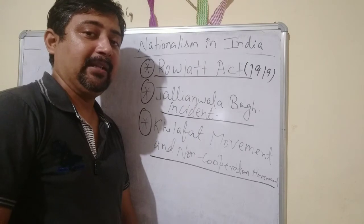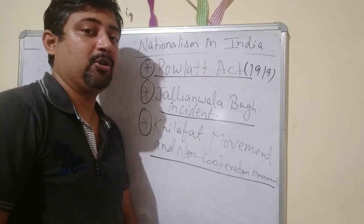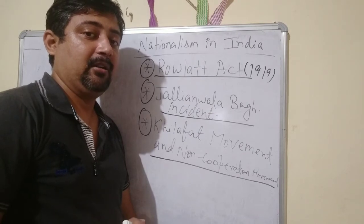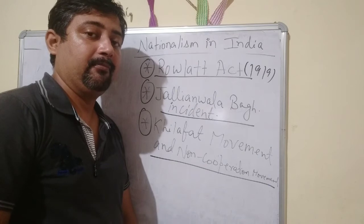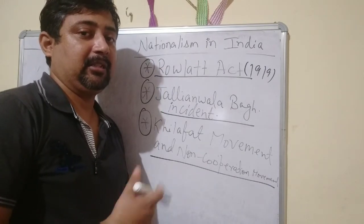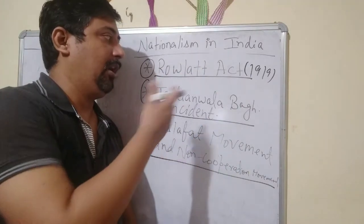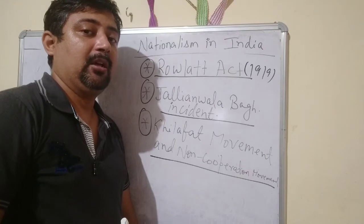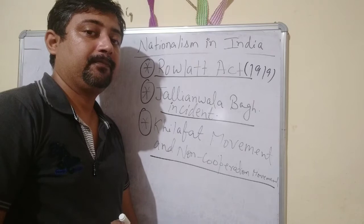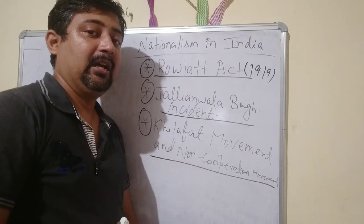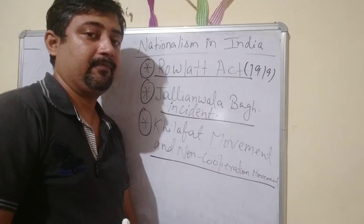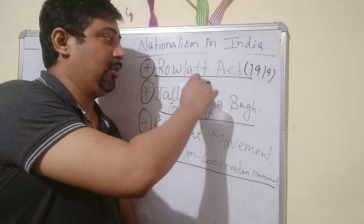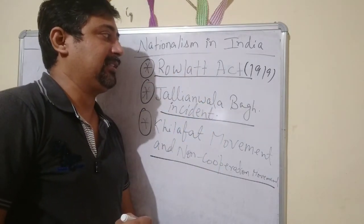We have to understand that whatever the Britishers were doing, they did it by passing laws. They wanted to show the world that whatever they were doing was being done legally. So whether it was correct or incorrect, right or wrong, it didn't matter — they passed the Rowlatt Act as a law, authorizing them to punish any Indian allegedly involved in political activity disturbing to the British. This is why the act was completely boycotted and criticized by all Indians, leading to various protest activities across the country.